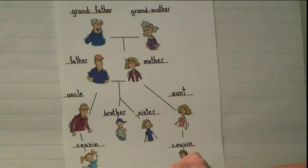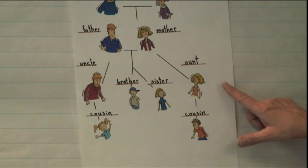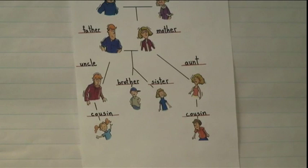Now let's go one step further. If your uncle has children, they are your cousins. You could have a girl cousin or a boy cousin. That also refers to your mother's sister — if she has children, they are your cousins.